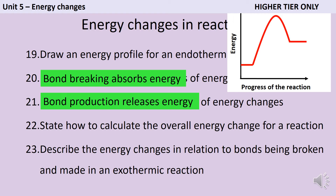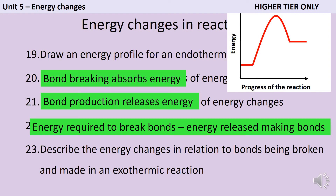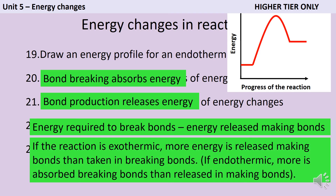To calculate the overall energy change for a reaction, you need to add up the energy required to break all the bonds on the left-hand side, and add up the energy required to make all the bonds on the right-hand side of the chemical equation, and then do bonds broken minus bonds made. If a reaction is exothermic, more energy is released in making the bonds than is taken in to break the bonds. If the reaction is endothermic, then more energy is absorbed breaking the bonds than is released making the bonds.